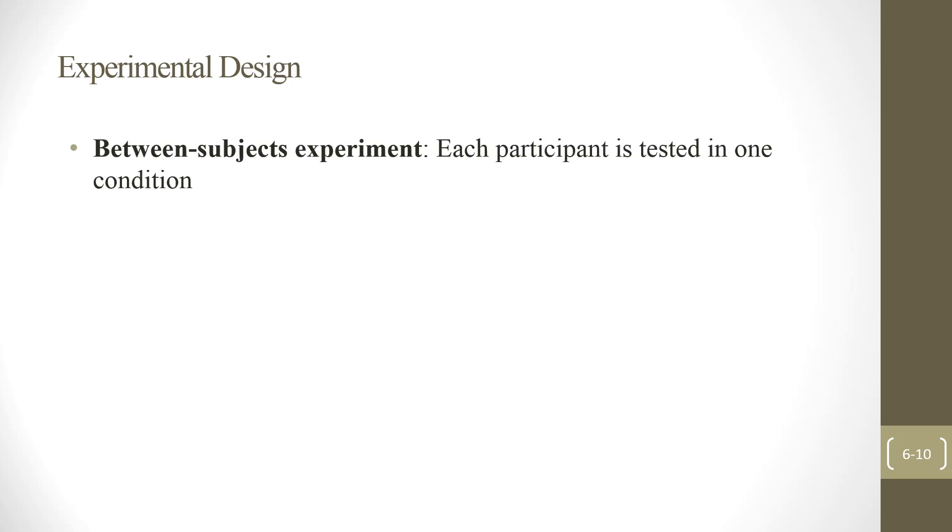Now let's talk about experimental design. There are two designs: between and within. Let's review. Between-participants or between-subjects experiment: each participant is tested in one condition. In other words, you need to go through random assignment. Some people will experience the experimental condition and others experience the control condition. In other words, each person just experiences one condition.